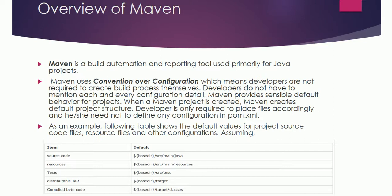Maven uses convention over configuration, which means developers are not required to create build processes themselves. Developers do not have to mention each and every configuration detail — Maven provides sensible default behavior for projects. When a Maven project is created, Maven creates a default project structure and the developer only needs to place files accordingly. There is no need to define any configuration in pom.xml.